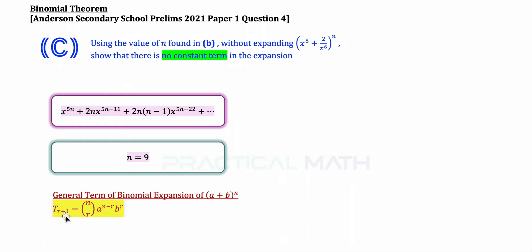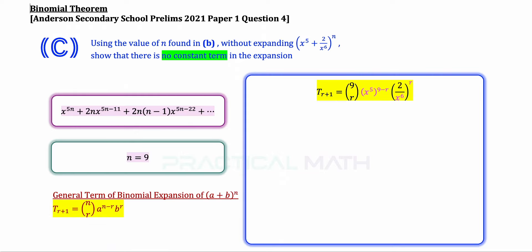Since r is related to the term number, r must be a non-negative integer: 0, 1, 2, 3, and so on. Applying the formula with n equals 9: we have 9Cr times (x^5)^(9−r) times (2/x^6)^r. Extracting only the x terms: x^5 to the power of (9−r) gives x^(5(9−r)), and 1/x^6 to the power of r gives x^(−6r).